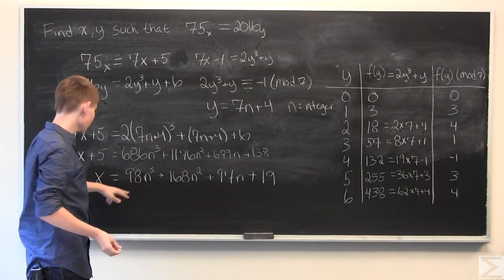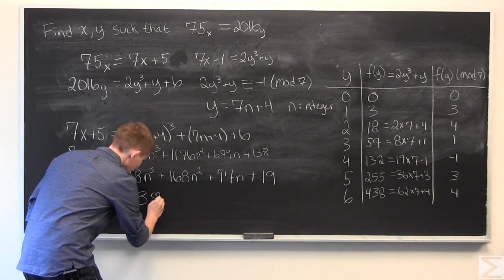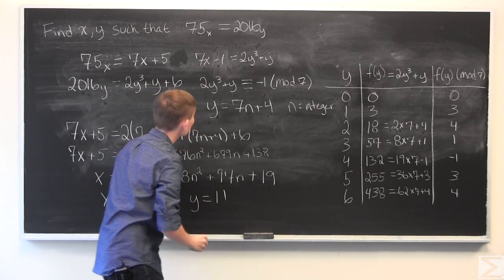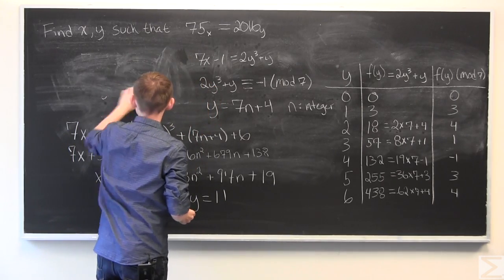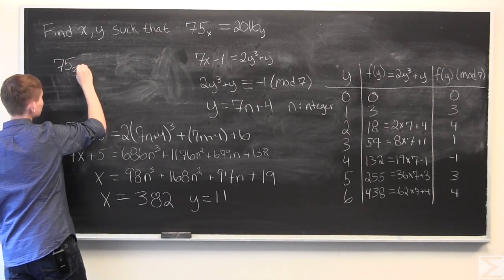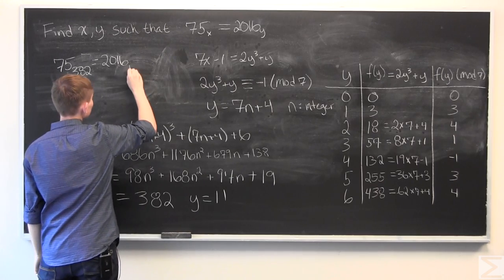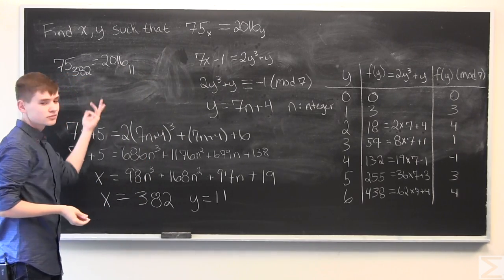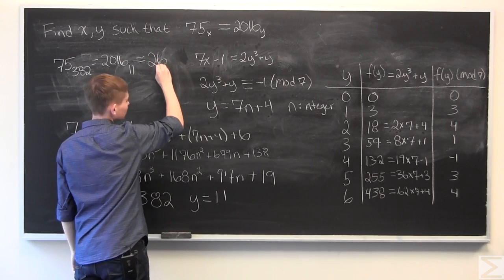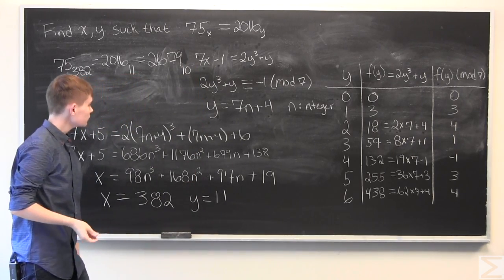So, we'll just say n is equal to 1. And we have x is equal to 382. And y is just equal to 11. And so, we found that 75 base 382 is equal to 2016 base 11. Which are two pretty useless bases, but... And this is equal to 2679 base 10. Which is the base we use.